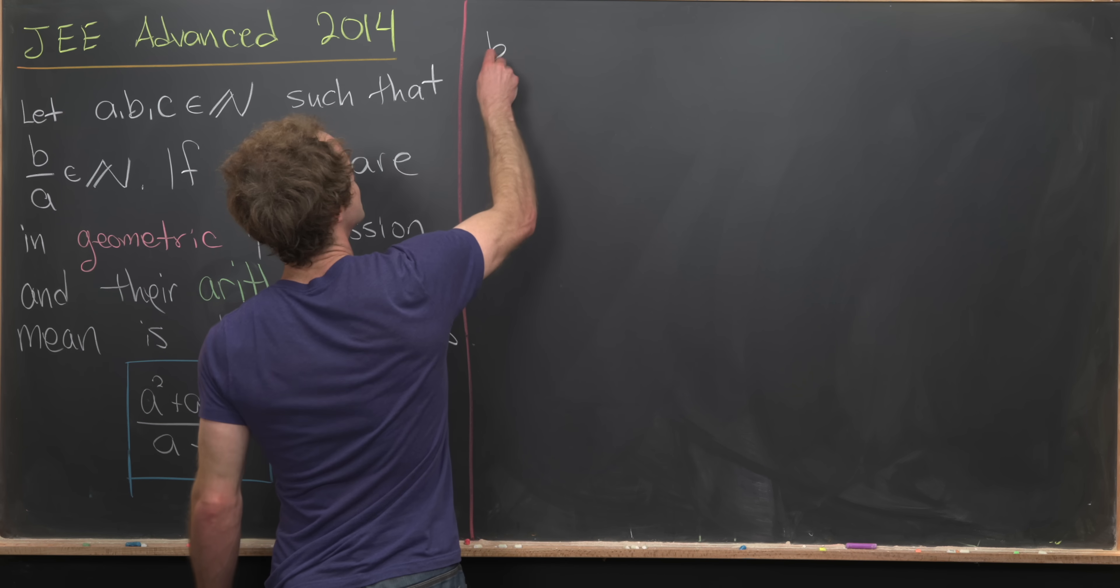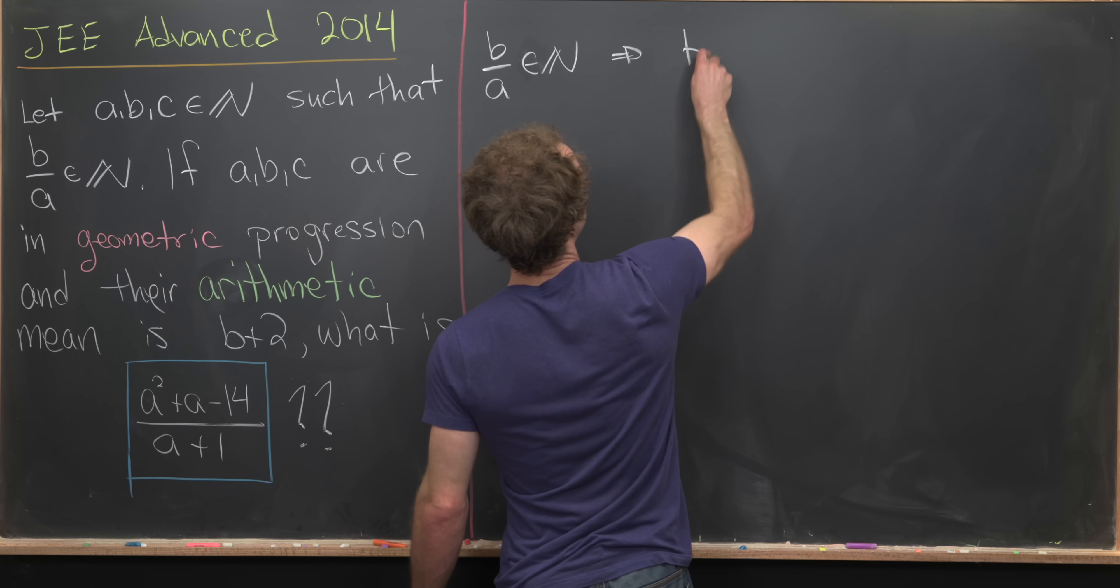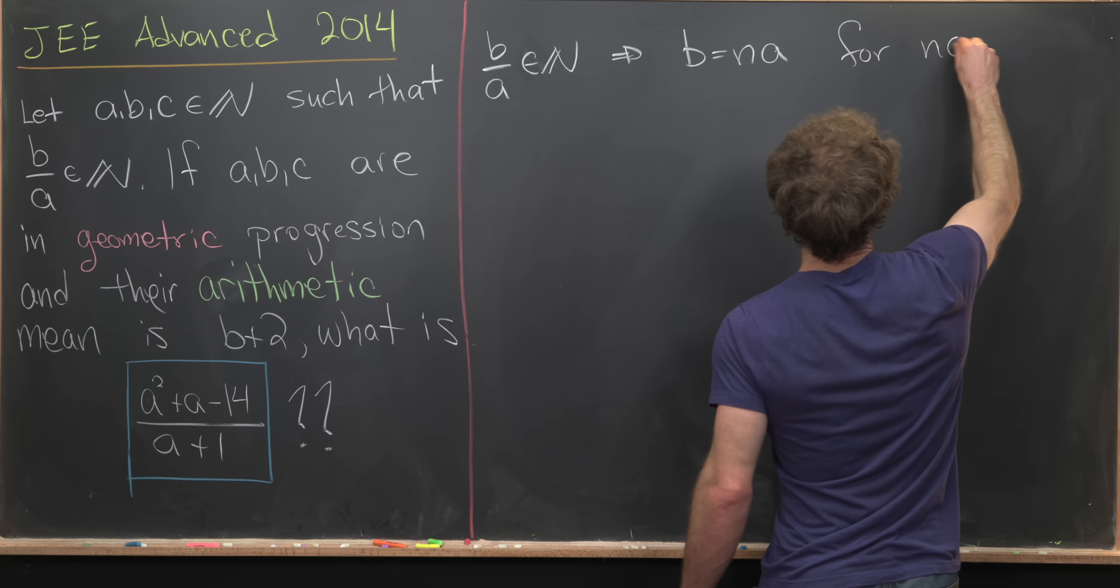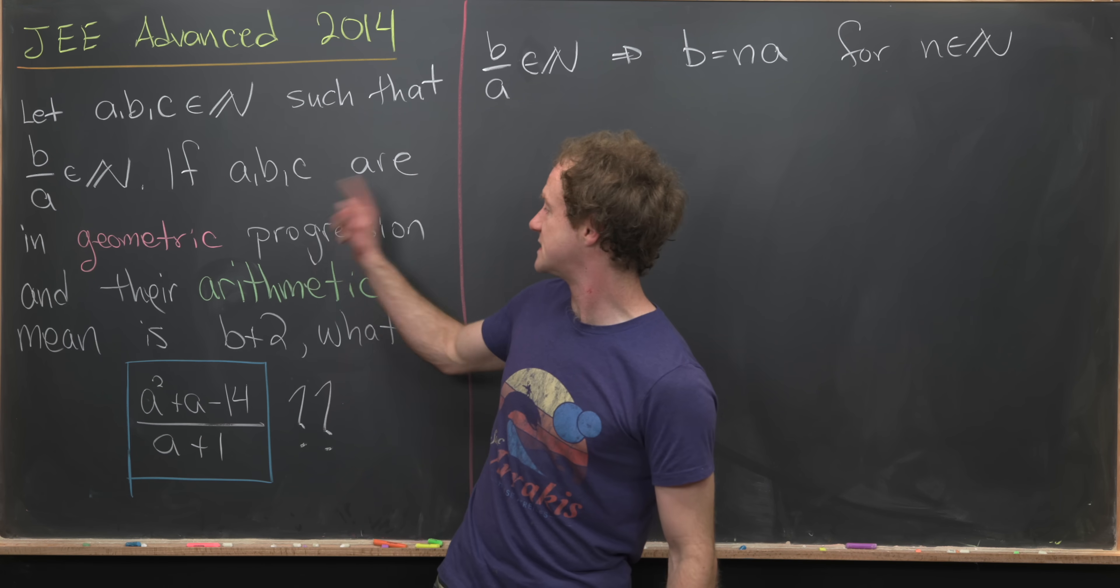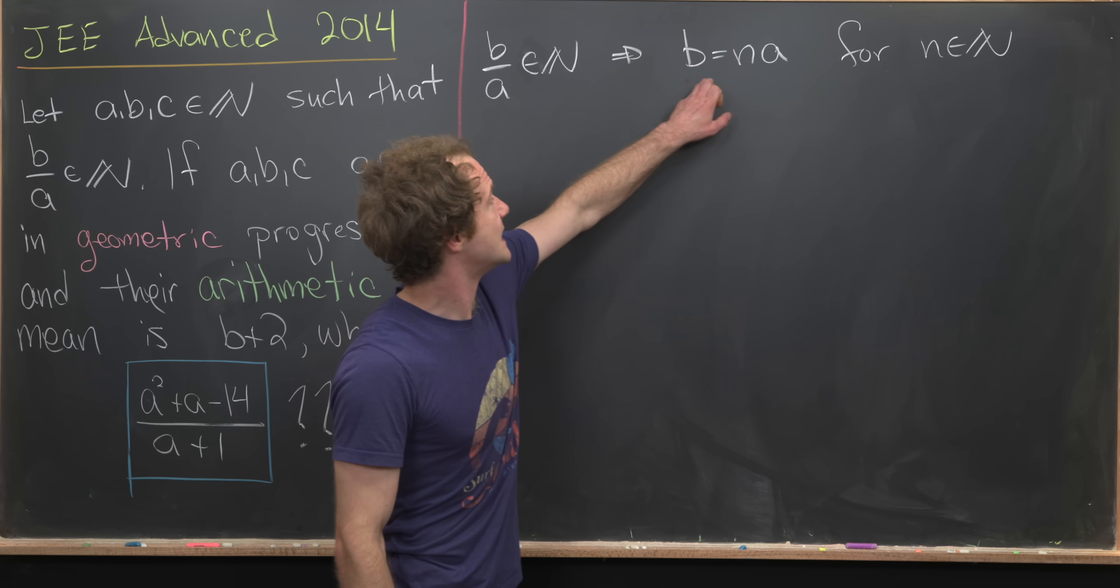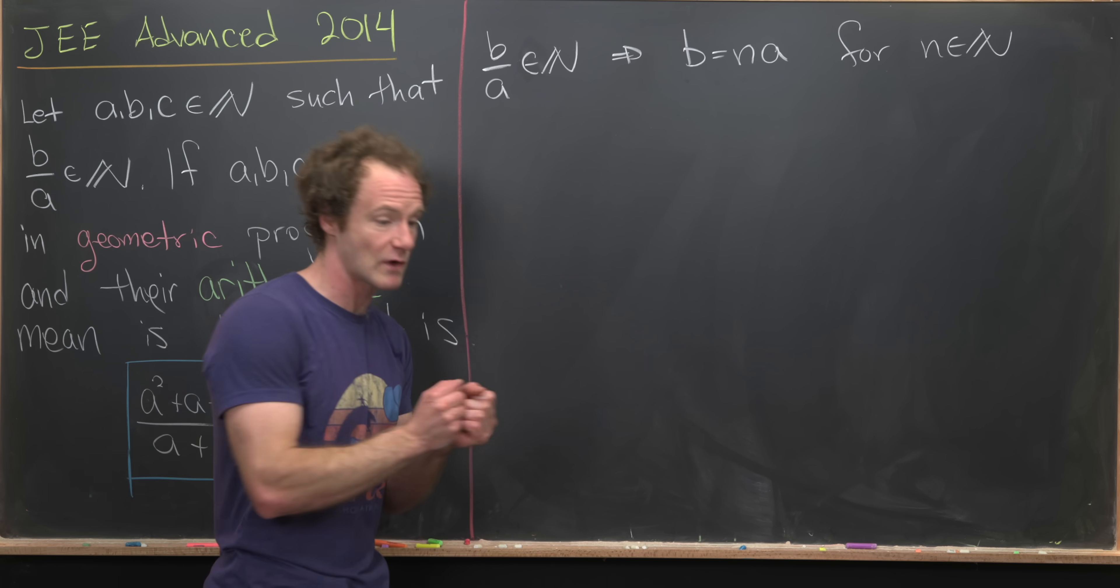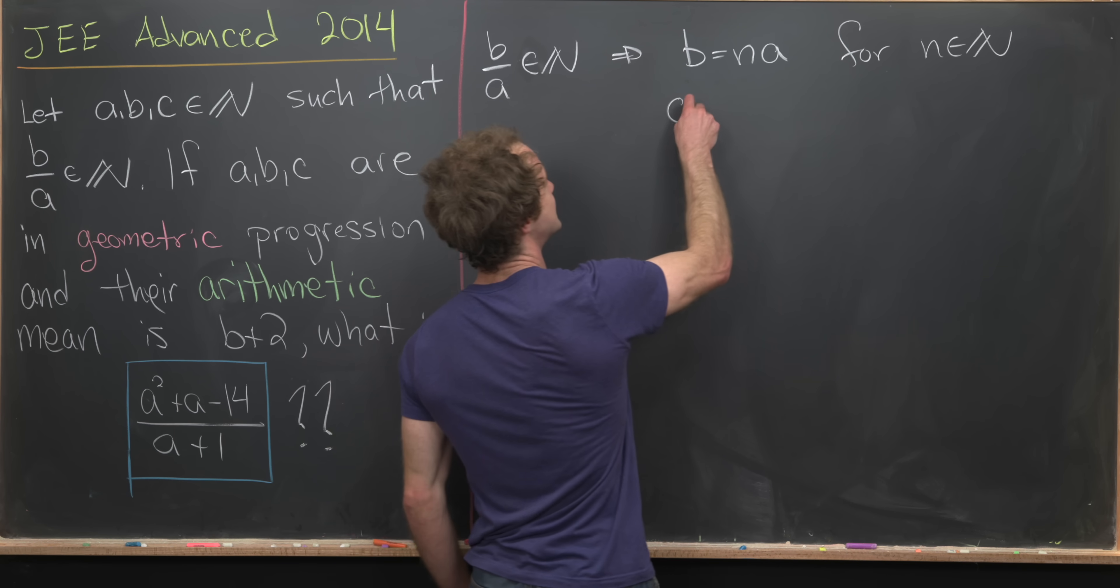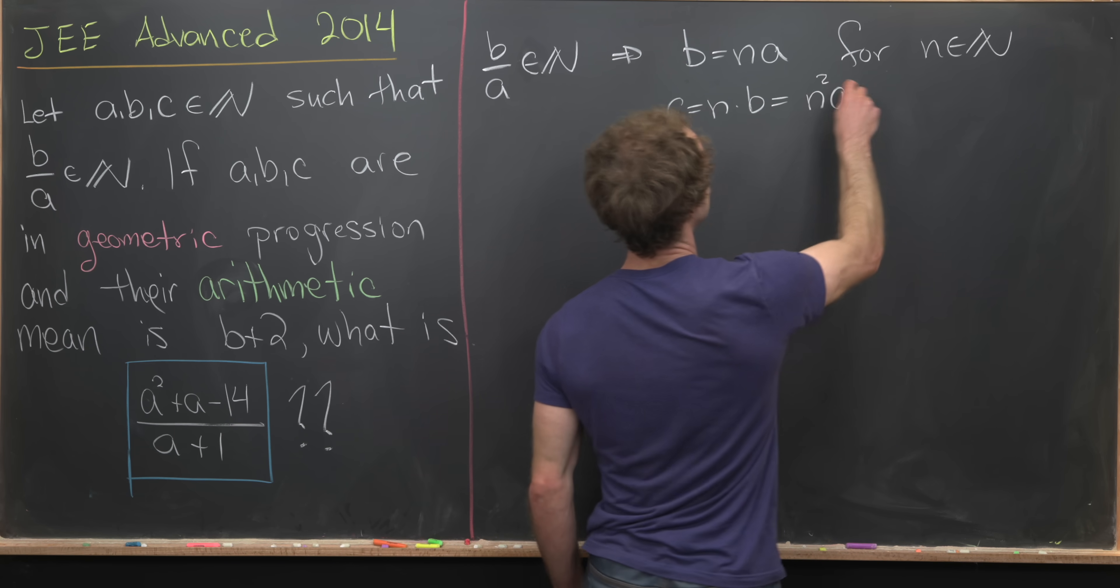So let's first notice that B over A is a natural number. That implies that B equals N times A for some natural number N. So that's pretty clear. Next, we'll use the fact that A, B, and C are in geometric progression to get a value for C. So notice that B equals N times A. So that means the common ratio of our geometric progression is this number N. So that means that C equals N times B, which is equal to N squared times A.